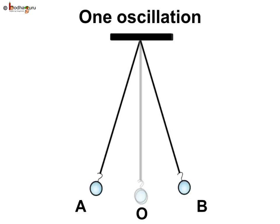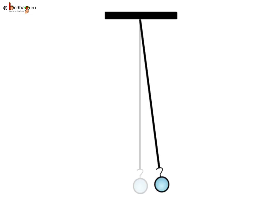The pendulum is said to have completed one oscillation when its bob, starting from its mean position O as given here, moves to A...